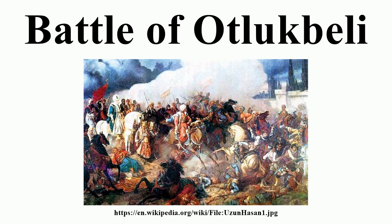Mehmed II conquered all of the eastern Black Sea region. Uzzan Hassan decided to seek help from Christian powers because he thought that the Ottomans would return for his own kingdom. Therefore, he decided to sign a treaty with the Republic of Venice, the rival of the Ottoman Empire at that time.